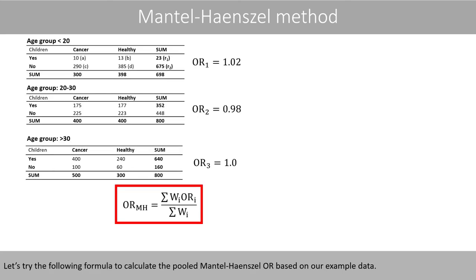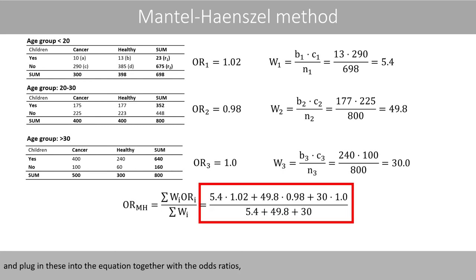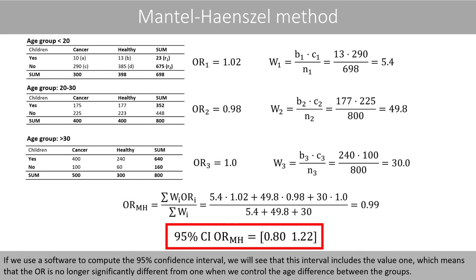Let's use this formula to calculate the pooled Mantel-Haenszel odds ratio based on our example data. We first calculate the weights of the three different groups and plug them into the equation together with the odds ratios. Using software to compute the 95% confidence interval, we see that this interval includes the value 1, which means the odds ratio is no longer significantly different from 1 when we control for the age difference within the groups.